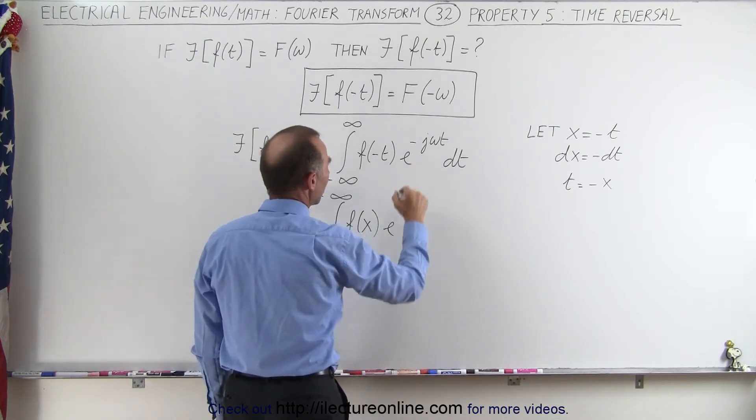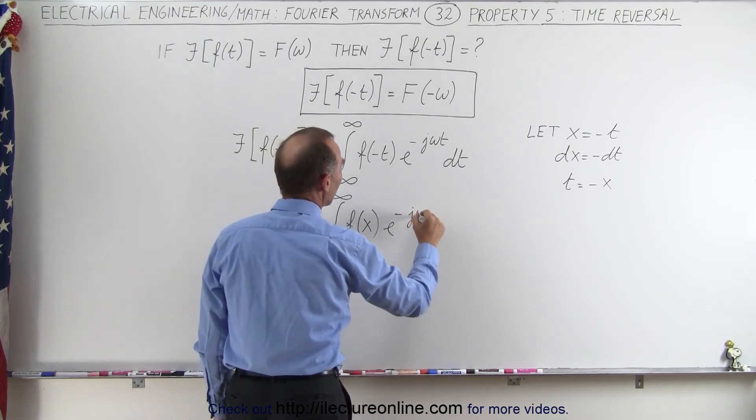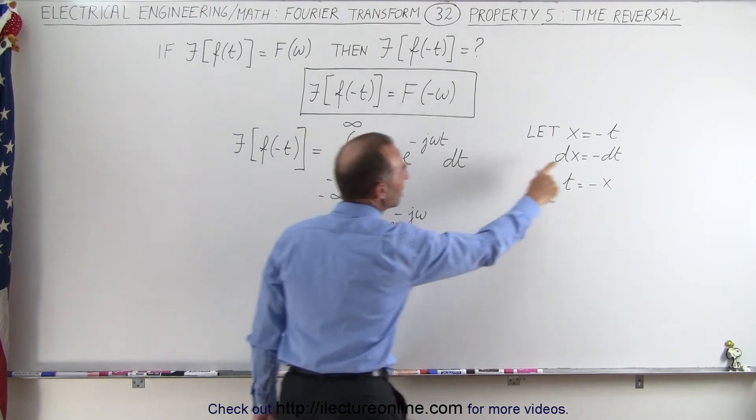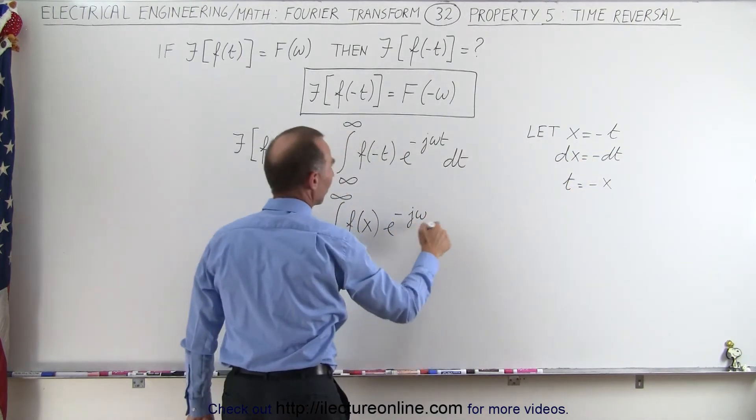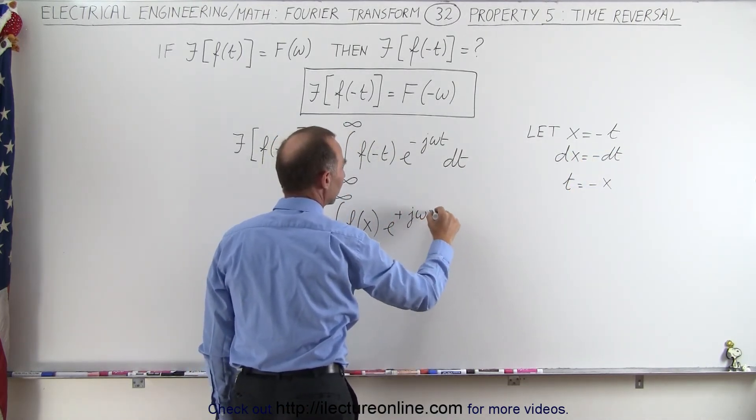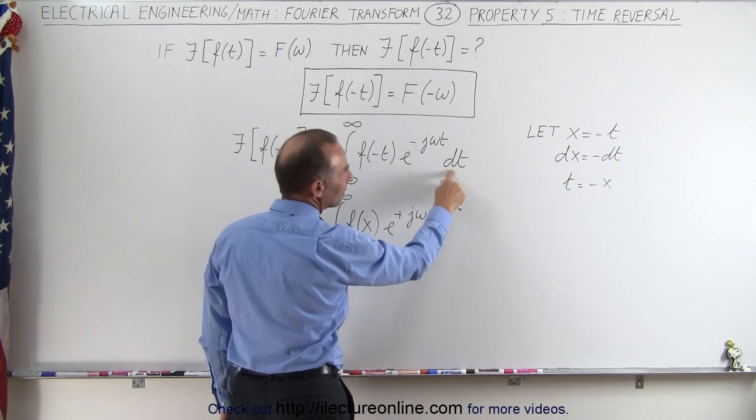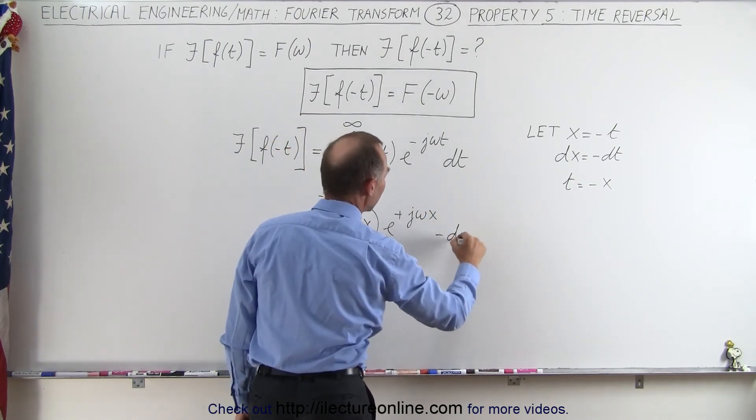Then we have e to the minus j omega, but instead of t we're going to plug in a negative x. So that makes this positive, put this as an x, and then instead of dt we're going to plug in a negative dx, so minus dx.